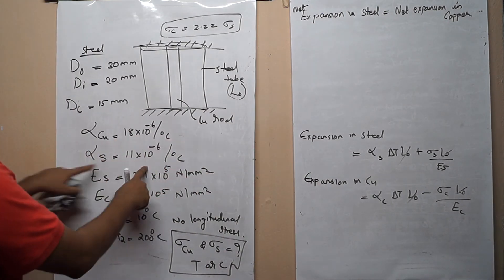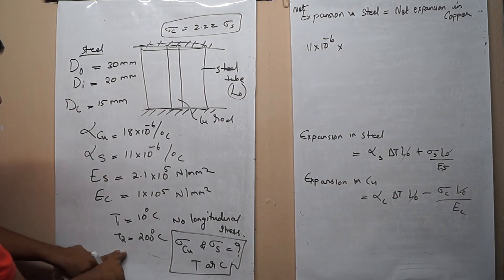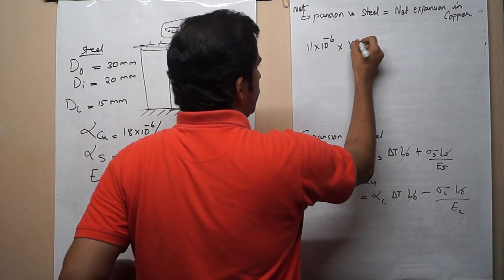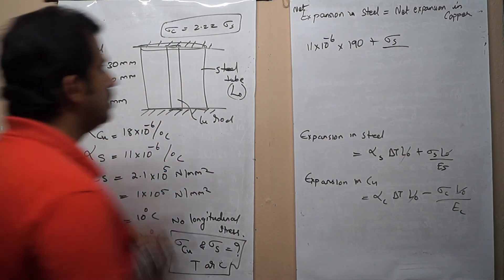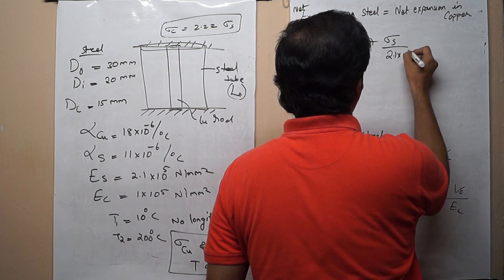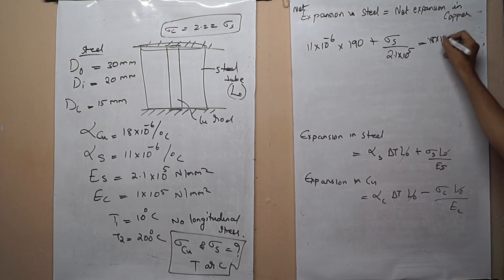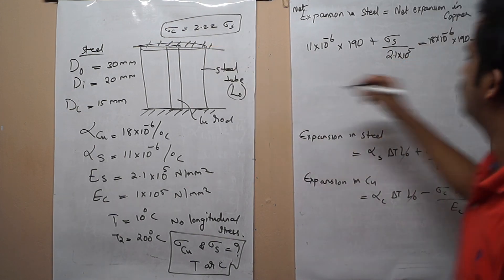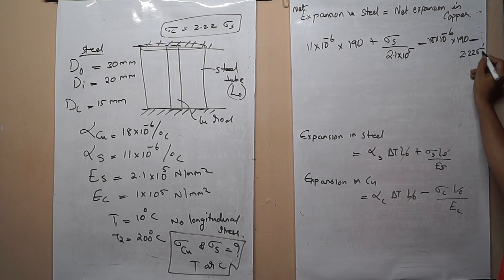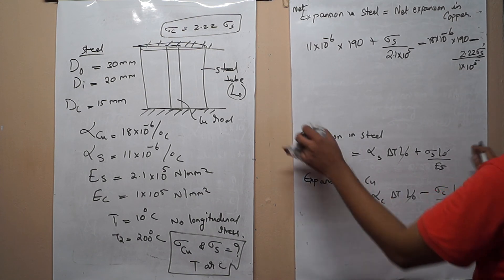Substituting values: α_steel = 11 × 10⁻⁶ (note: using the given steel value), ΔT = T2 − T1 = 200 − 10 = 190°C, and E_steel = 2.1 × 10⁵. On the copper side: α_copper = 18 × 10⁻⁶, ΔT = 190, and σ_c = 2.22 σ_s with E_copper = 1 × 10⁵. The equation becomes: 11 × 10⁻⁶ × 190 + σ_s / (2.1 × 10⁵) = 18 × 10⁻⁶ × 190 − 2.22 σ_s / (1 × 10⁵).